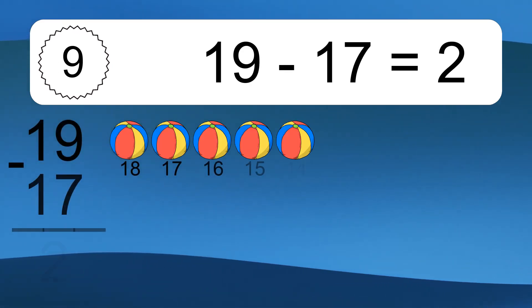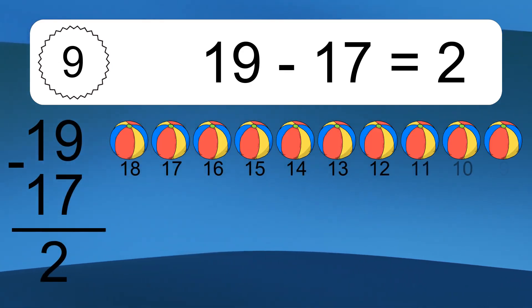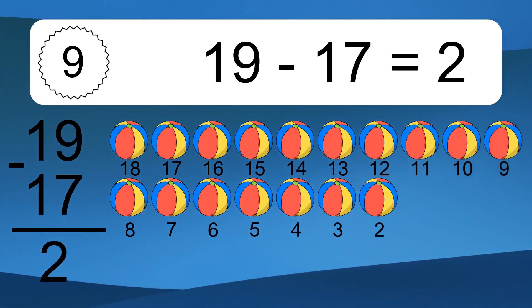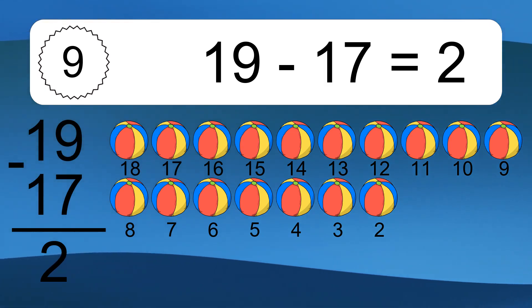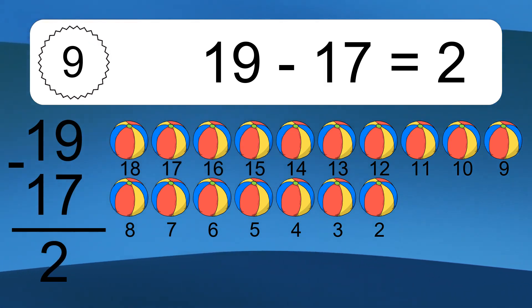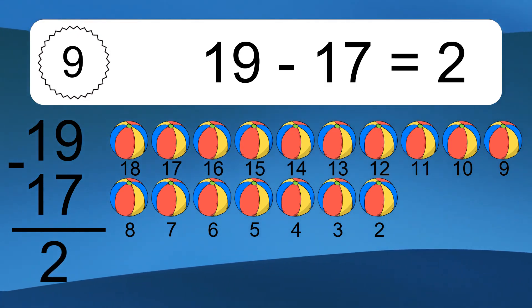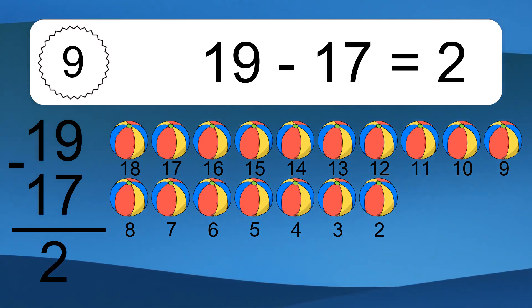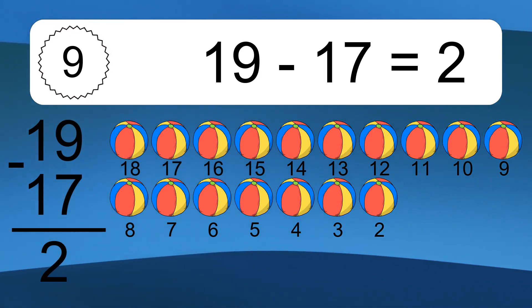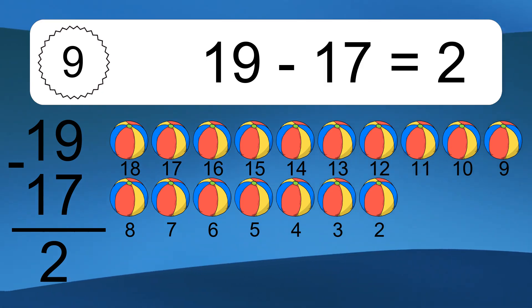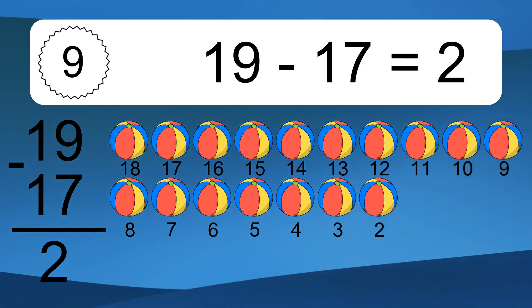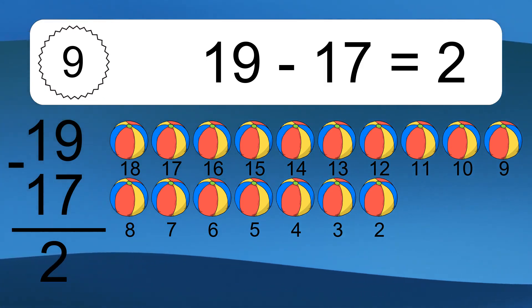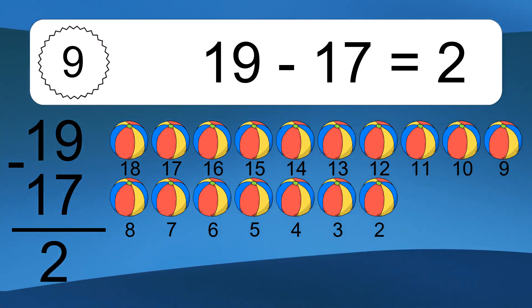19 minus 17 equals what? 19 minus 17 equals 2. Let's count it. 18, 17, 16, 15, 14, 13, 12, 11, 10, 9, 8, 7, 6, 5, 4, 3, 2.